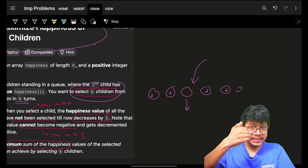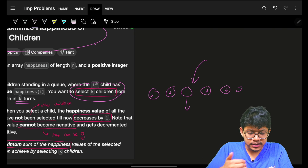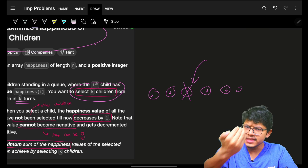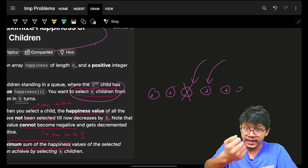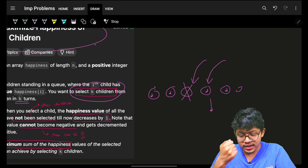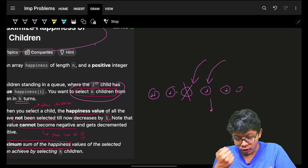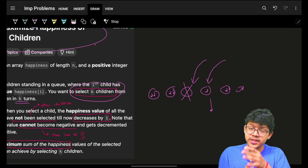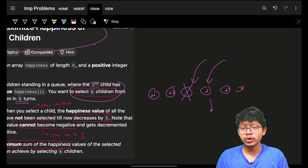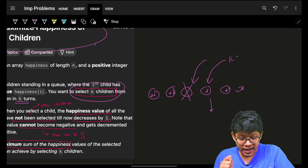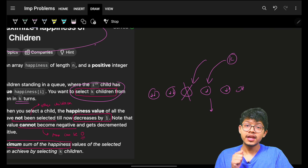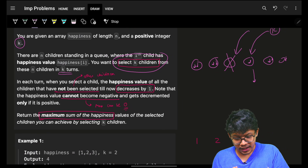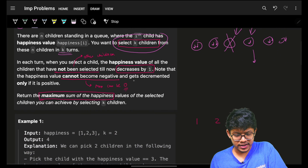In the next turn, the previously chosen child is gone. You pick the next child, take their happiness, and again all remaining unchosen children reduce by one. This process continues because you must complete k turns and collect happiness from k children.